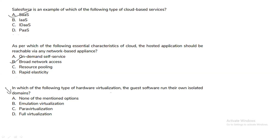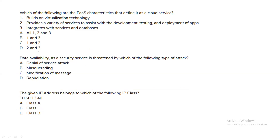In which type of hardware virtualization does the guest software run in its own isolated domain — none, emulation, virtualization, para-virtualization, or full virtualization? Para-virtualization is the type where guest software runs in its own isolated domain.